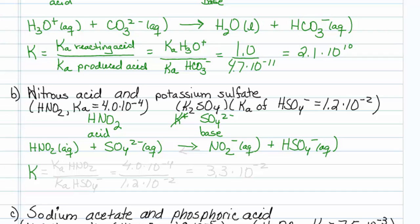Now for the equilibrium constant. This would be Ka of HNO2 over Ka of my produced acid, which is HSO4 minus. So that will give me 4 times 10 to the minus 4 divided by 1.2 times 10 to the minus 2. This comes out to be 3.3 times 10 to the minus 2.